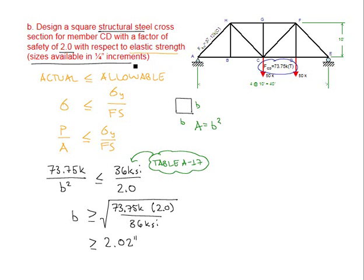The sizes are available only in quarter inch increments, so we must round up since B must be greater than or equal to 2.02 inches. Rounding up to the nearest quarter inch, we use a 2.25 inch square structural steel cross-section for member CD.